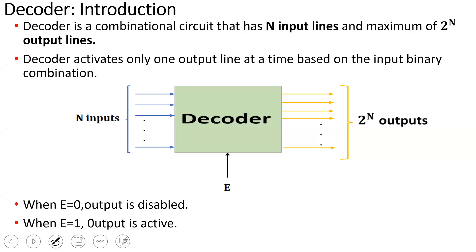We will activate the input lines that are active, then activate the output line. If you use an enable signal — that is enable E equal to 0 — for any combination of inputs, all output lines will be 0. Once enable is equal to 1, then the output is activated. So this is a decoder.